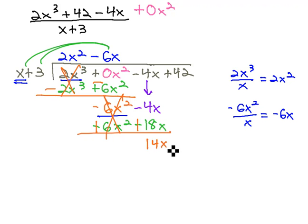When we do, we're left with 14x plus 42. Finally, we can divide that 14x by x. And when we do, we're just left with the positive 14.